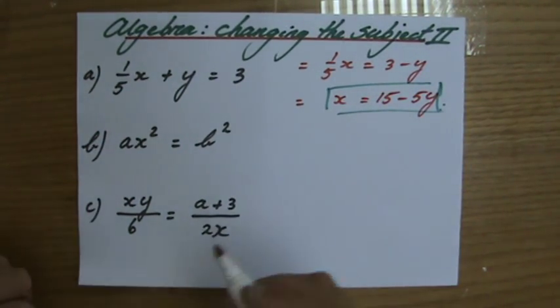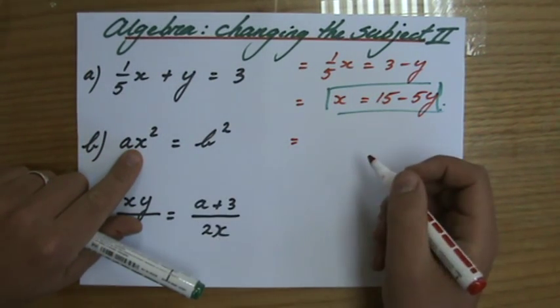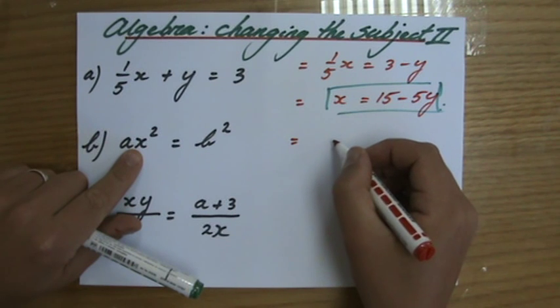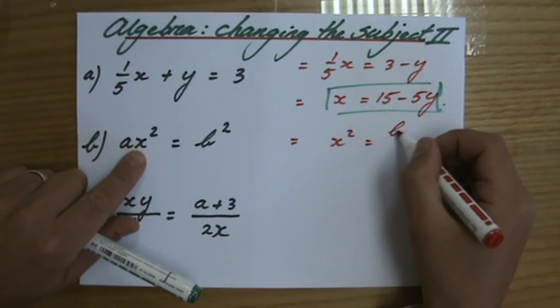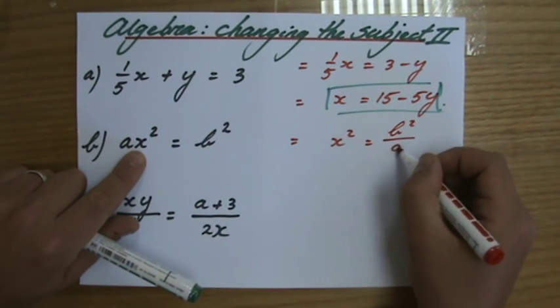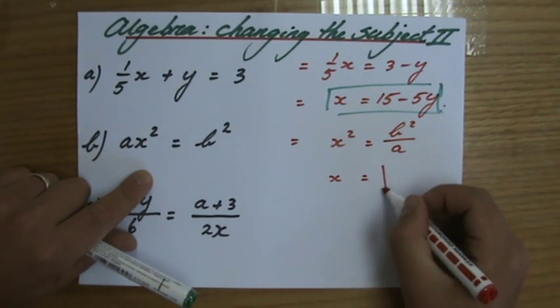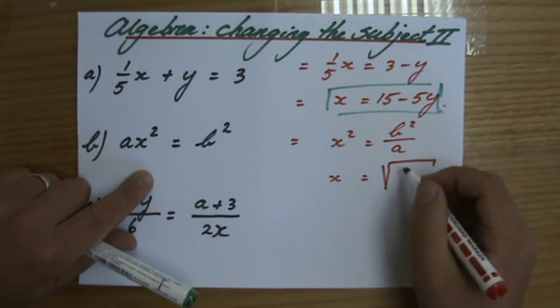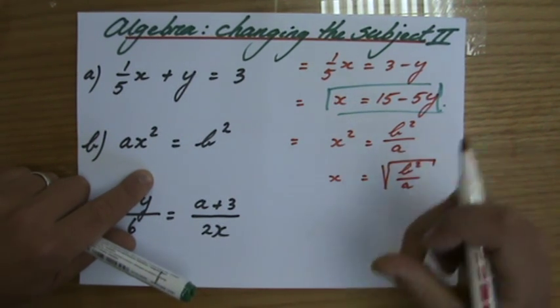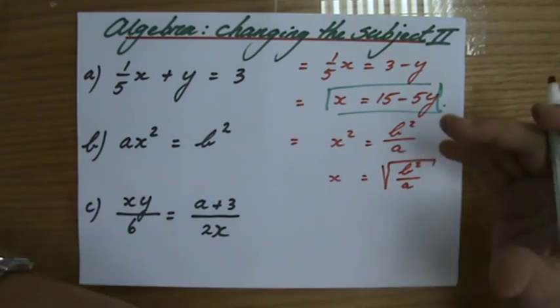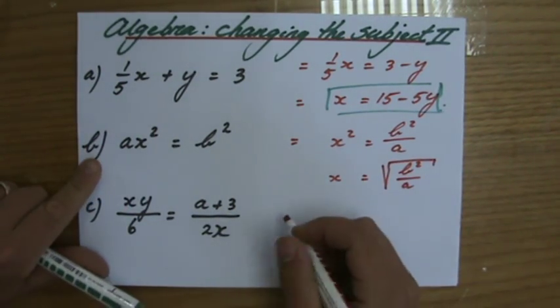Moving on to the next question. ax² equals b². First of all, I'll divide both sides by a, so x² equals b² over a. How do I get rid of that squared? I have to take the square root on both sides. So b² over a, the entire fraction inside that square root sign. You could perhaps simplify that, but like that is fine.